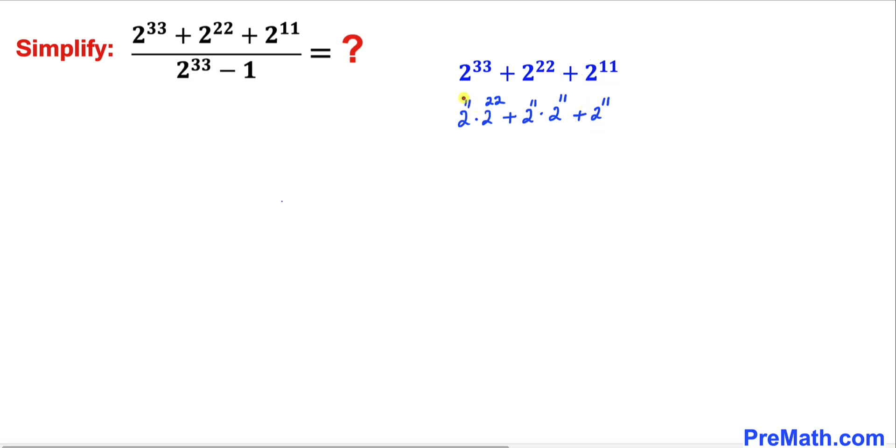And now we can see we have 2 power 11, 2 power 11, and 2 power 11 in common. So therefore we can factor out 2 power 11 and we end up with 2 power 22 plus 2 power 11 plus 1.